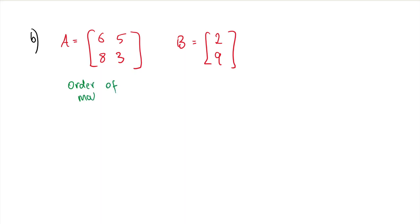Order of matrix A is we have two rows and two columns, so this one's 2 by 2. And then order of matrix B has two rows and one column.